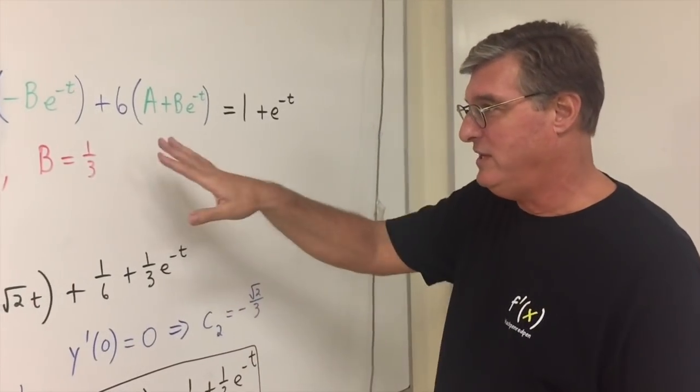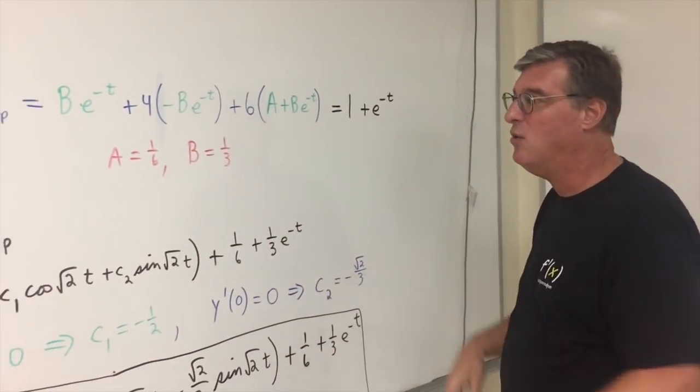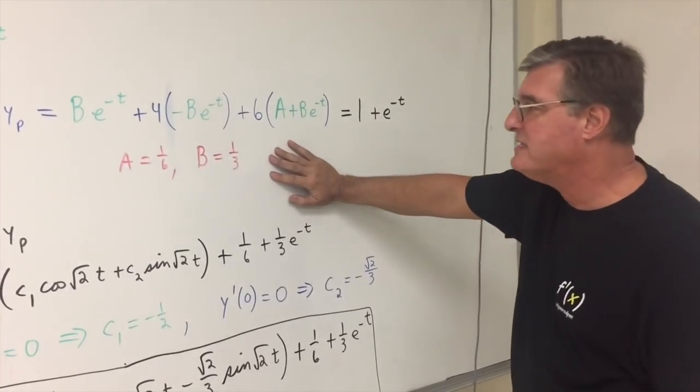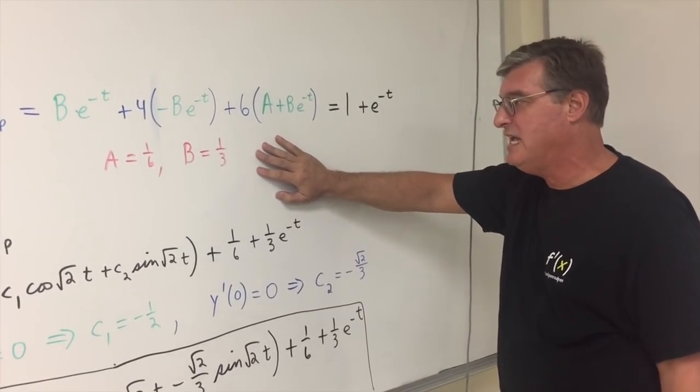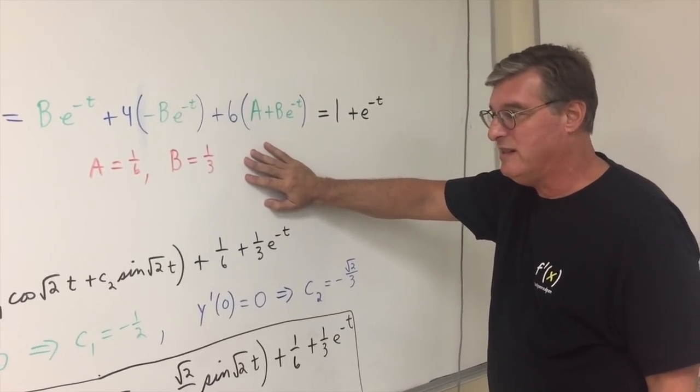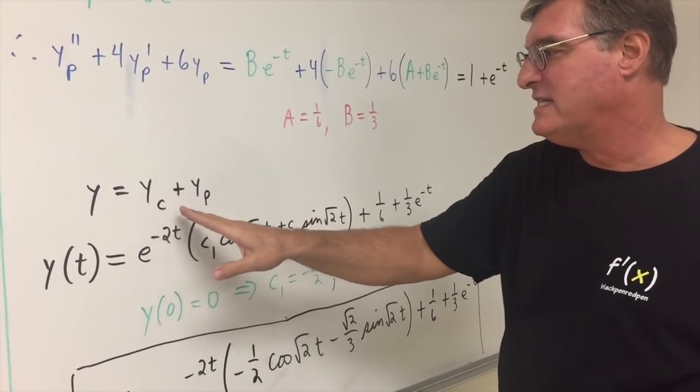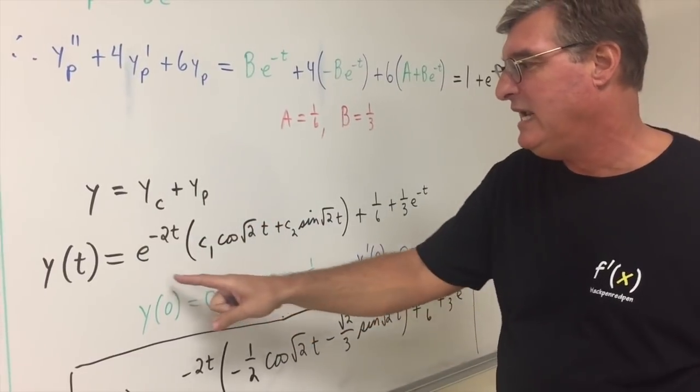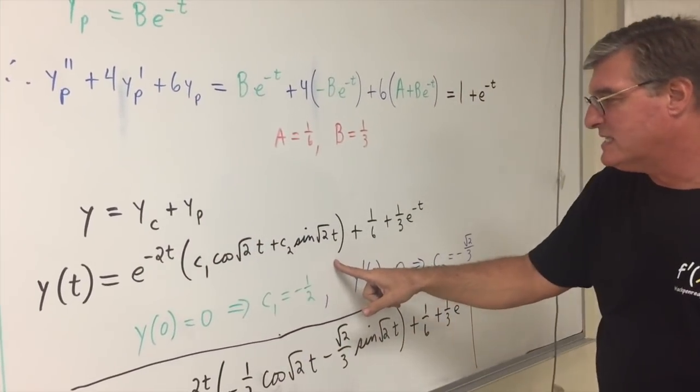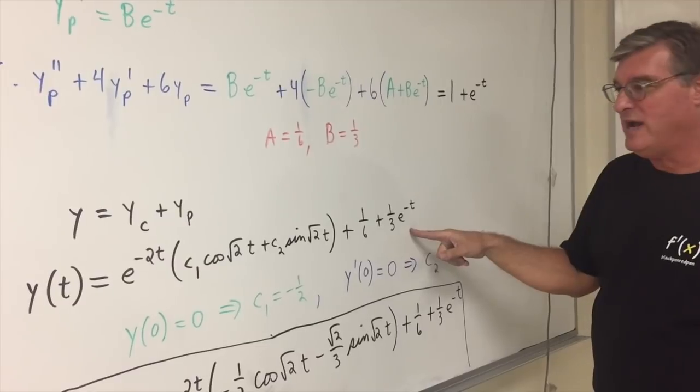Set that equal to the right-hand side, which is 1 plus e to the minus t. Now, I'll leave the algebra to you, but you should verify that when you equate the coefficients here, your a is going to turn out to be 1 sixth, and your b is going to turn out to be 1 third. So you know your final answer for y is going to be the y sub c plus the y sub p. We know this is the y sub c, and now we know the y sub p.